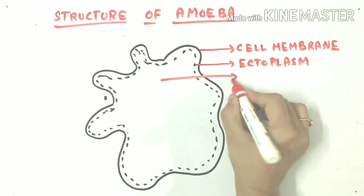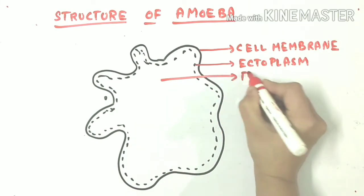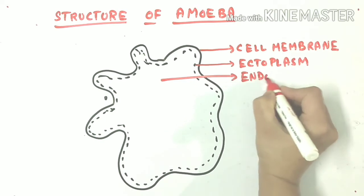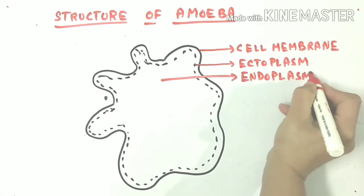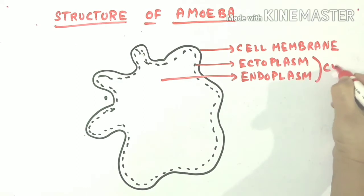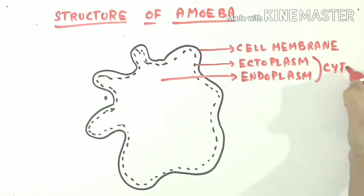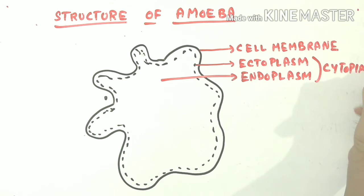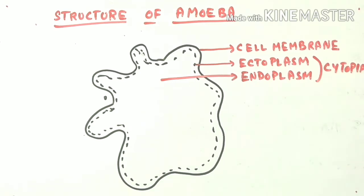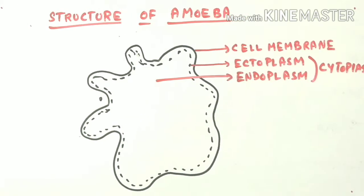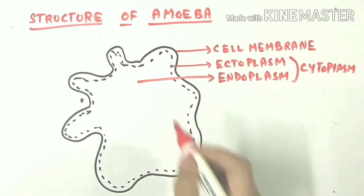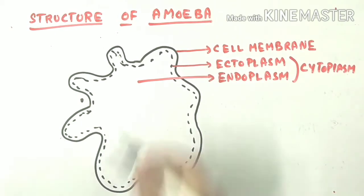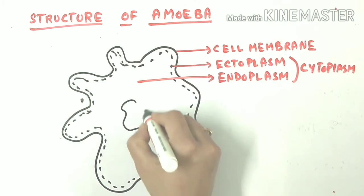Ectoplasm is much denser than endoplasm. Ectoplasm and endoplasm together are known as cytoplasm. This is endoplasm, which is slightly less viscous than ectoplasm. Now we'll draw a very important part of the amoeba — or any cell — and that is the nucleus.